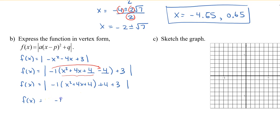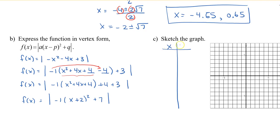Now that we have a perfect square, we factor to get negative 1 times the quantity x plus 2, all squared, plus 7. So I'm going to graph the absolute value of this parabola. First, I'll graph the parabola without the absolute value. We take our vertex — the opposite sign of plus 2, so it's negative 2, positive 7. Then we pick two points on either side and plug them into our equation. So we get the points 3 and 6 and 6 and 3. Let's plot these five points on our graph.